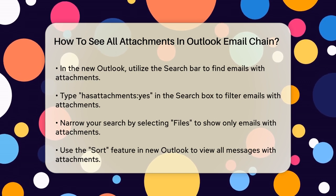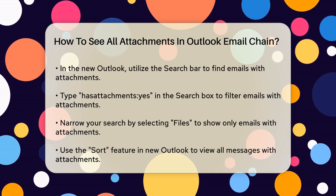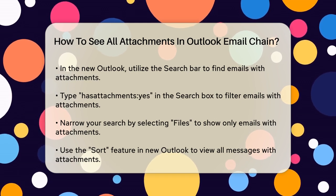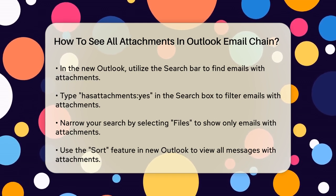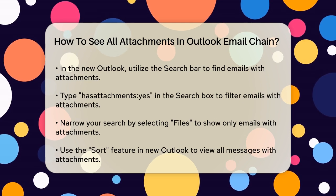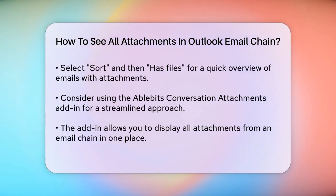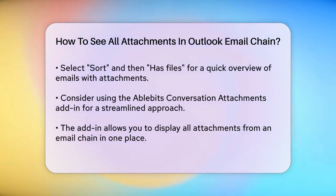Another powerful tool is the Sort feature. In the new Outlook, you can select Sort and then Has Files to view all messages with attachments in one go. This helps you quickly identify which emails have attachments without having to sift through each one individually. If you're dealing with a very large email chain and need a more streamlined approach,